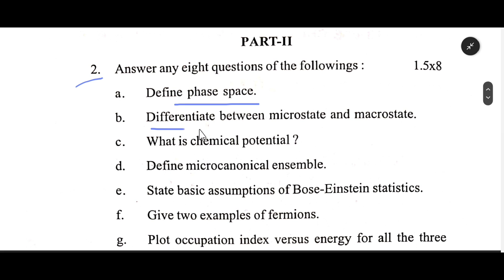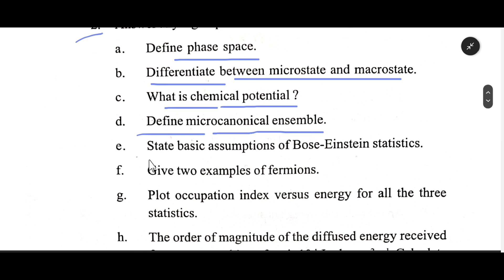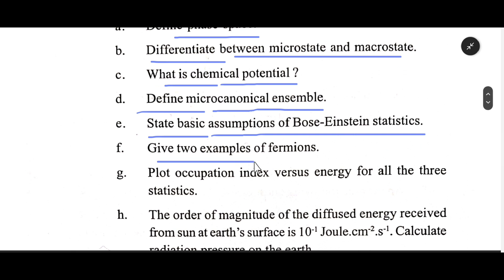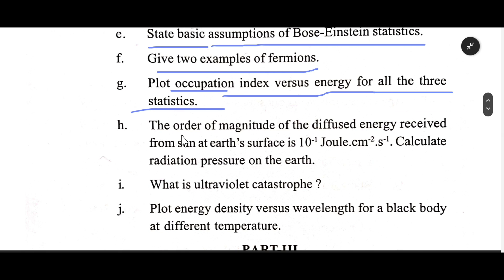Number Two (Short Answer Questions): Define phase space. Differentiate between microstate and macrostate. What is chemical potential? Define the grand canonical ensemble and state the basic assumptions of Bose-Einstein statistics. Give two examples of fermions. Plot the occupation index versus energy for all three statistics.